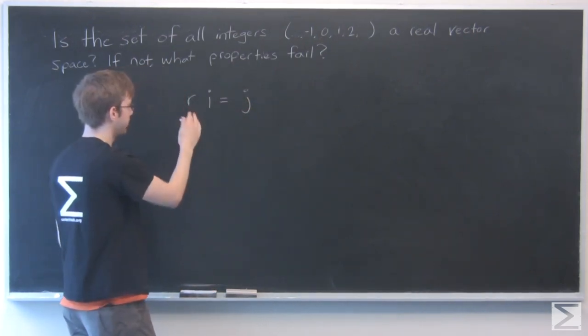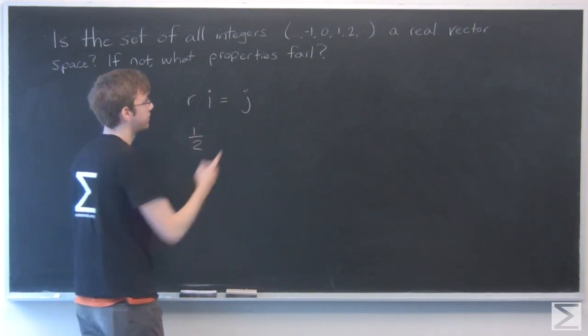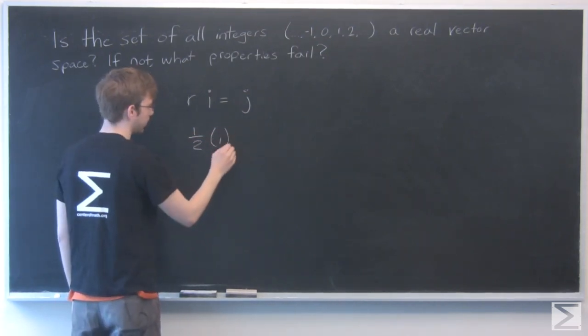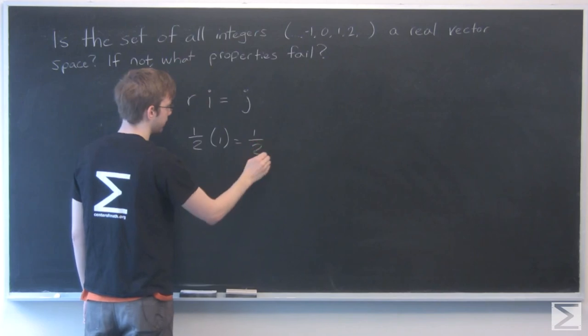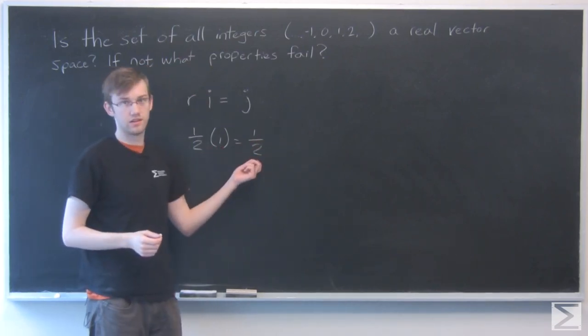However, this scalar can be something like 1/2. So if I have 1/2 times an integer like 1, I get 1/2, and here my result is not an integer.